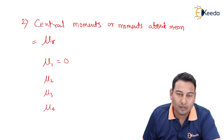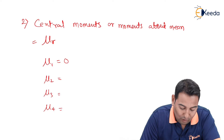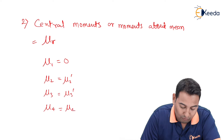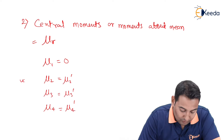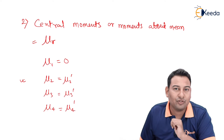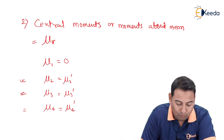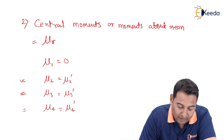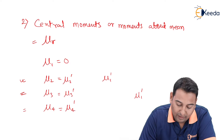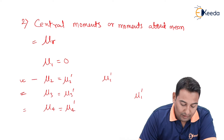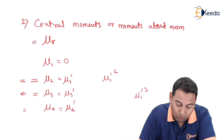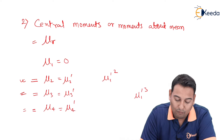Remember this trick — it is very important. First, mu 1 is always zero. For mu 2, mu 3, and mu 4, start with mu 2 dash, mu 3 dash, mu 4 dash respectively. Mu 2 will contain two terms, mu 3 will contain three terms, and mu 4 will contain four terms. Mu 1 dash is always fixed at the end. Here for mu 2 we take square, for mu 3 we take cube, and for mu 4 we take the fourth power.